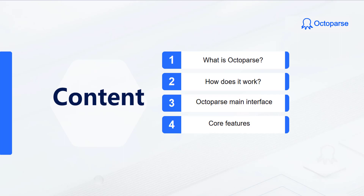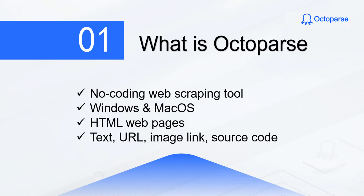Octoparse is a non-coding web scraping software, working both for Windows and macOS. It focuses on scraping HTML web pages. Most of the web data like text content, URL links, image URLs, or the HTML code can be grabbed easily with Octoparse.